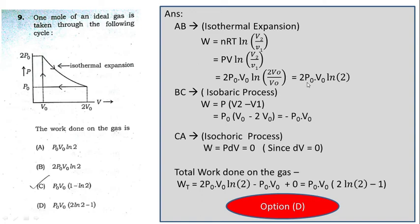From B to C, pressure remains constant at p₀ — isobaric process. W_BC = p(V₂ − V₁) = p₀(V₀ − 2V₀) = −p₀V₀. From C to A, volume remains constant — isochoric process — so W_CA = 0. Total work W_total = 2p₀V₀ ln 2 − p₀V₀. Option D is correct.